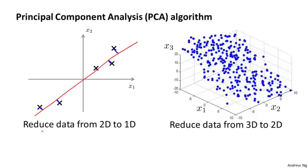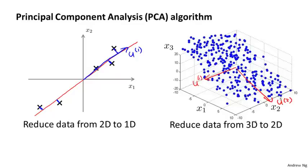The sum of the squared projection errors is the square of the length of those blue line segments. Specifically, what we want to do is find a vector u1 which specifies that direction. Or in the 2D case, we want to find two vectors u1 and u2 to define the surface onto which to project our data.